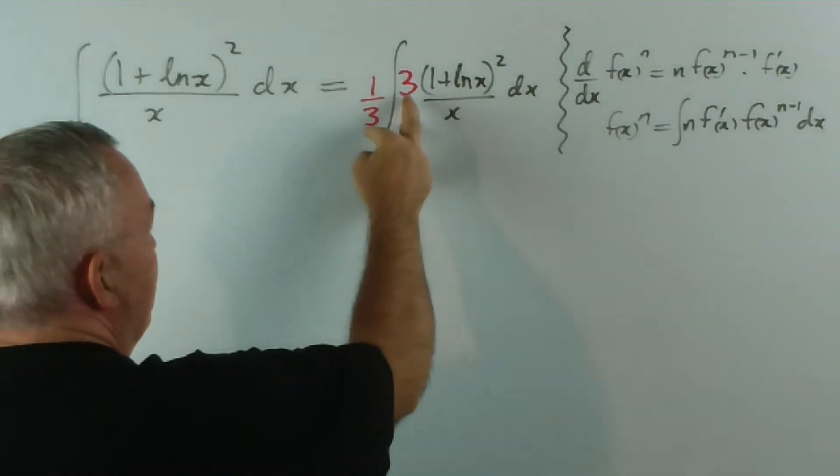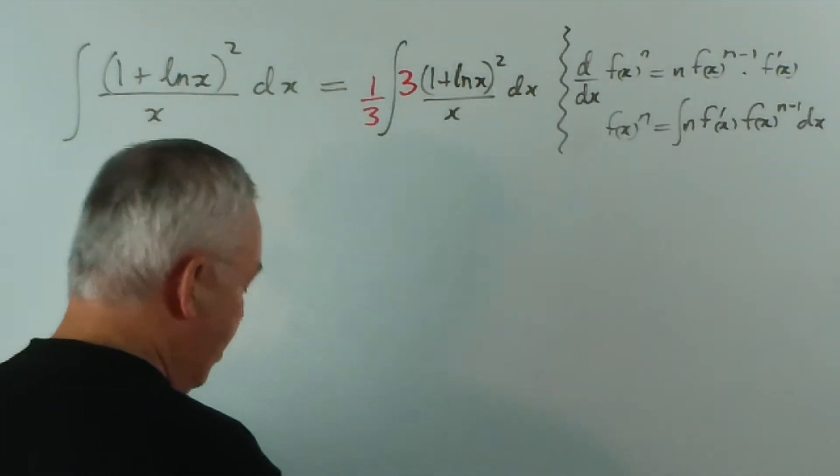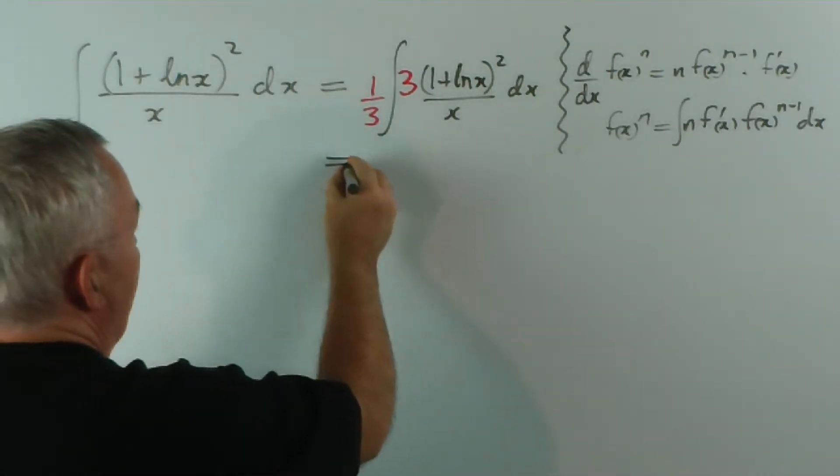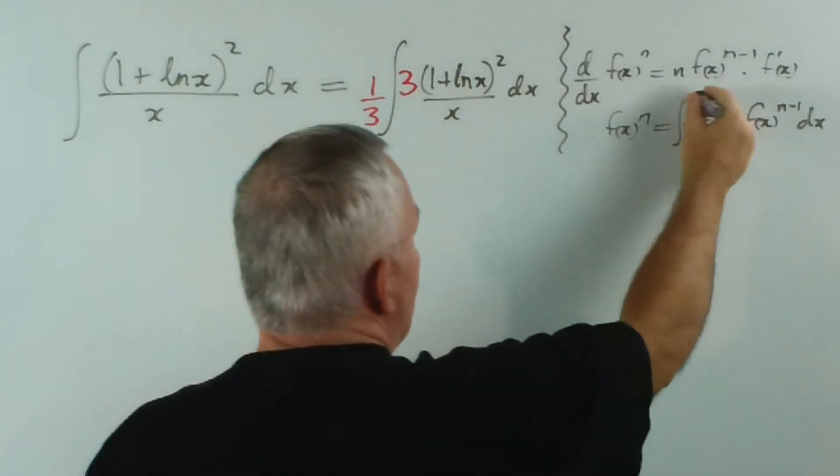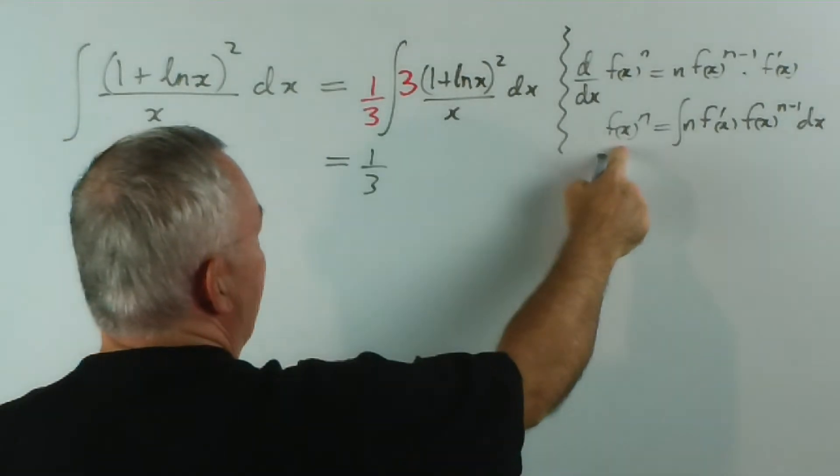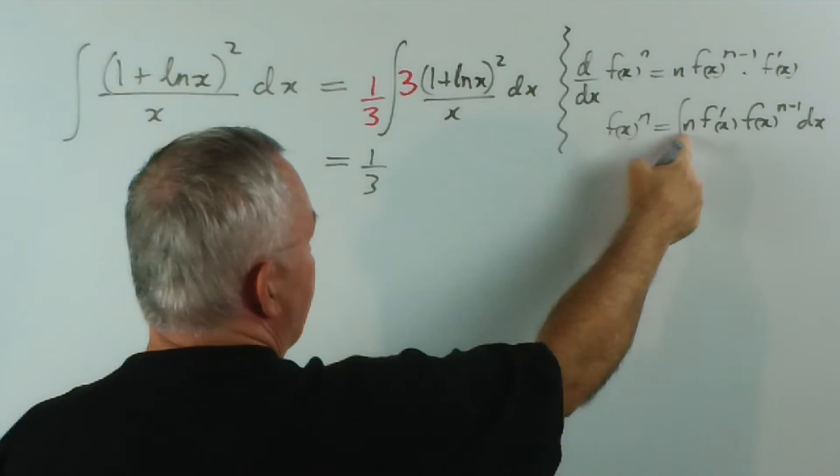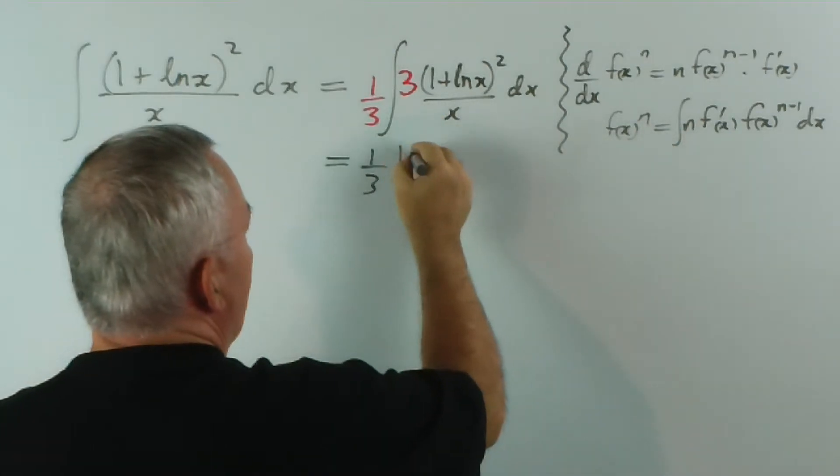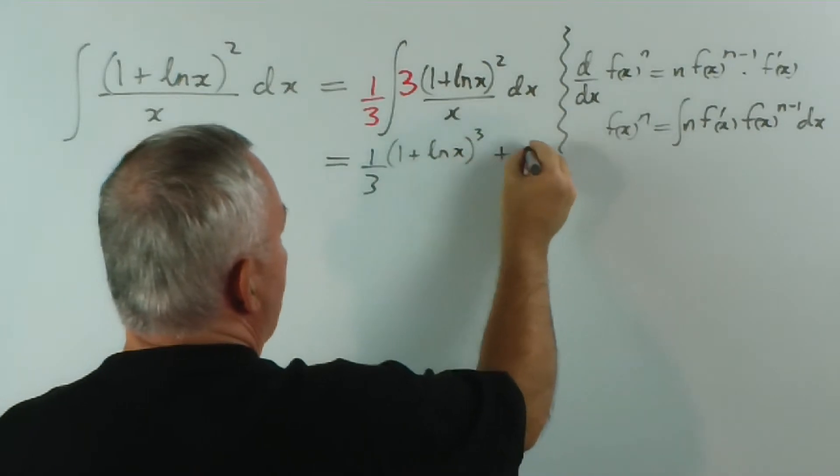As I keep saying, a third of 3 is 1, and multiplying by 1 won't change the value of the derivative. So, we have one third, and now all of this integral matches this beautiful pattern... well, perhaps not so beautiful... and the result is going to be this function to the power n, which is this number here. So it's going to be 1 plus log x cubed plus c.